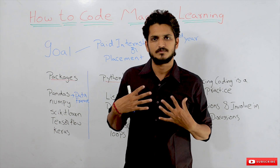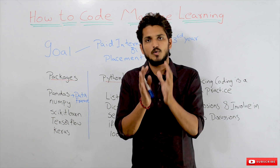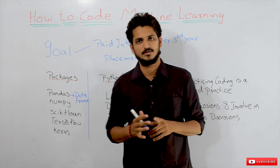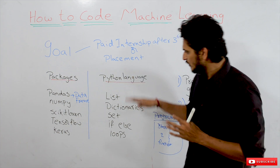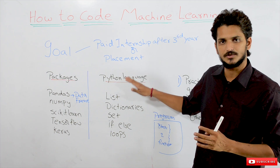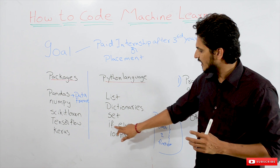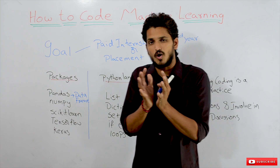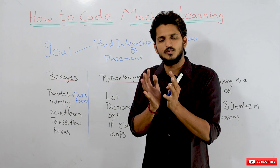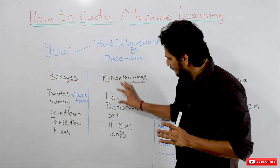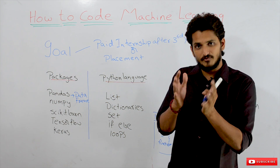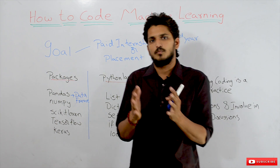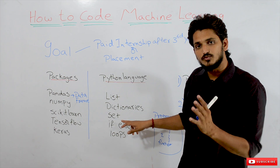For implementing ML models, the first thing is you have to know Python language. In Python we mostly use these concepts: lists, dictionaries, sets, if-else statements, and loops. Coding ML is very simple — we don't use complex logic, just simple logic. If you know these concepts you will find it very easy to code ML models. If you don't know these concepts, please watch our Python classes and come back here.